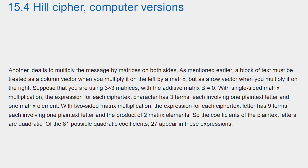Another idea is to multiply the message by matrices on both sides. A block of text must be treated as a column vector when you multiply it on the left by a matrix, but as a row vector when you multiply it on the right. Suppose that you are using 3x3 matrices with the additive matrix B = 0. With single-sided matrix multiplication, the expression for each ciphertext character has three terms, each involving one plaintext letter and one matrix element. With two-sided matrix multiplication, the expression for each ciphertext letter has nine terms, each involving one plaintext letter and the product of two matrix elements. So the coefficients of the plaintext letters are quadratic. Of the 81 possible quadratic coefficients, 27 appear in these expressions.